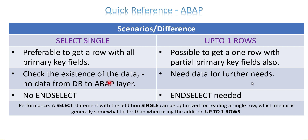If you need the record for further manipulation in your program, go with UP TO ONE ROWS. If you just want to check that data exists, use SELECT SINGLE. But if you need the data for further processing, go with UP TO ONE ROWS.